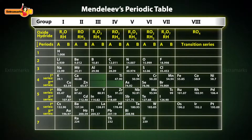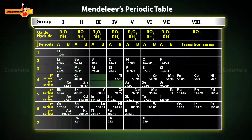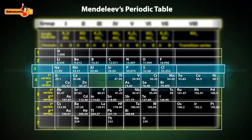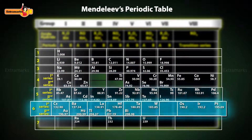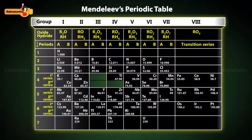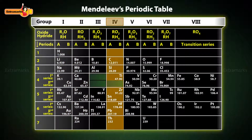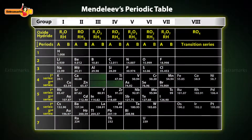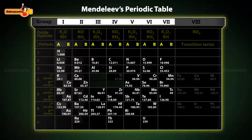Now here is Mendeleev's periodic table. Let's look carefully and find how it helps in understanding elements in a systematic manner. Mendeleev's periodic table has horizontal rows called periods, which are numbered from 1 to 7. It has 8 vertical columns called groups, which are numbered from 1 to 8. Group 1 to 7 are further subdivided into subgroup A and B based on differences in their properties.